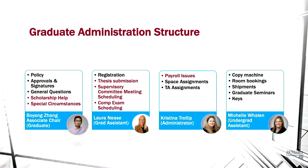First, we're going to talk about the graduate mission structure — basically, who should you go to if you have questions. I'm Boyang Jiang, the associate chair of the department. My responsibility is to oversee graduate policy. I make annual updates to the policy and I approve and sign off on a number of documents, such as your comprehensive exam topics and your annual committee meeting report.